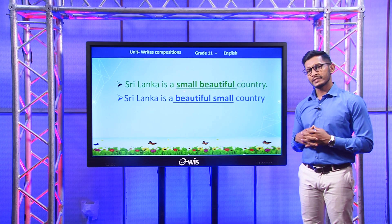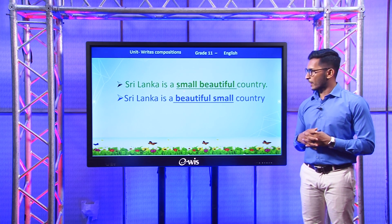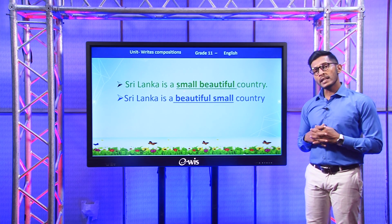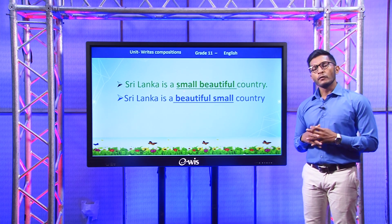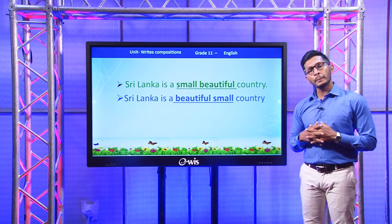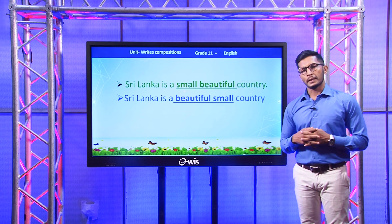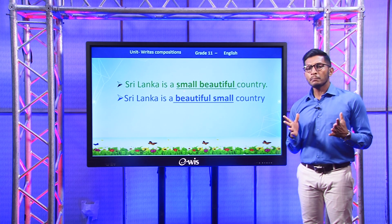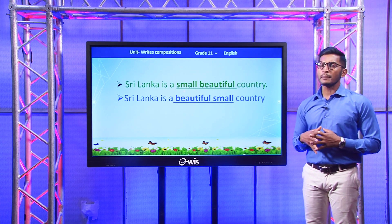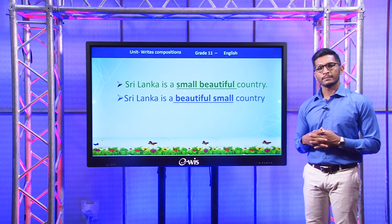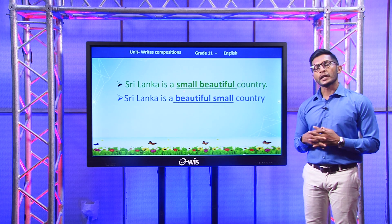Do you think they are both correct? No. When we describe a noun using more than two adjectives, there is an order for us to follow. We usually write the adjectives that describe opinions first, and then the adjectives that describe facts or details of the particular noun. For example, if you describe a city, you can express your opinion: a lovely city, a beautiful city, a fantastic city. If you want to describe a food item, you can simply say it's a delicious food. These are adjectives we use to describe our opinions.